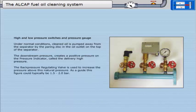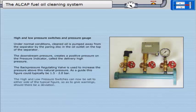The back pressure regulating valve is used to increase the pressure above this natural pressure. As a guide, this figure could typically be 1.5 to 2.0 bar. The high and low pressure switches can now be set to either side of the typical figure so as to give warnings should there be a deviation.